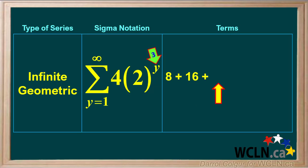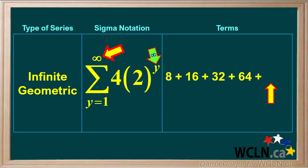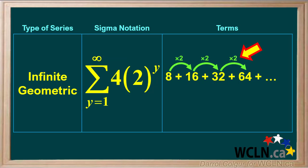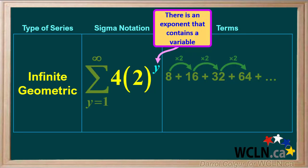For the third term, the value of y is 3, so the value is 4 times 2 to the power of 3, or 4 times 8, which is 32. For the fourth term, y equals 4, giving 4 times 2 to the power of 4, which is 64. This is an infinite geometric series that goes on forever, so we'll write dot dot dot. We need to multiply each term by 2 to get the next, so the common ratio r is equal to 2. The function has an exponent containing a variable — y in this case — which is another indication that we're dealing with a geometric series.